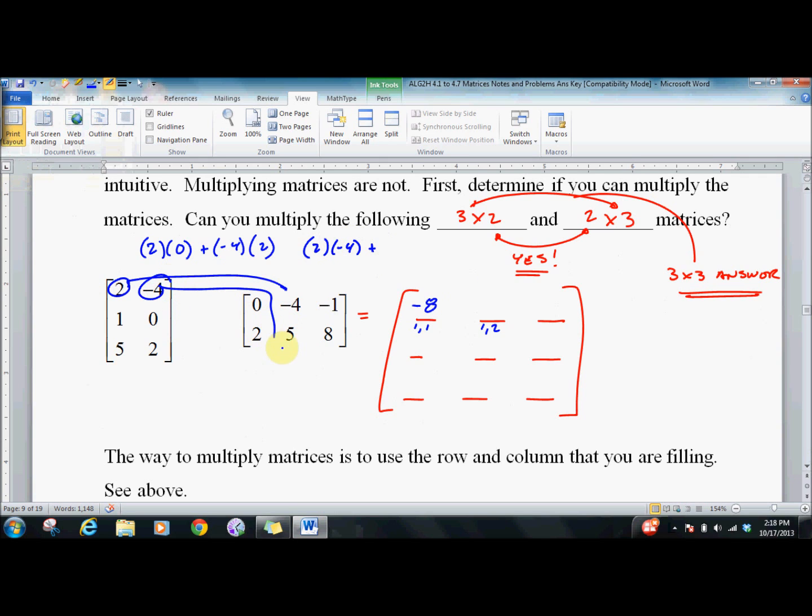Plus negative four times five gives us negative twenty-eight. And as you can see it's very easy to make mistakes here. You can write all over the place. I like to do them in our head if we can. So two times negative one is negative two, and negative four times eight is negative thirty-two, so it's negative thirty-four.